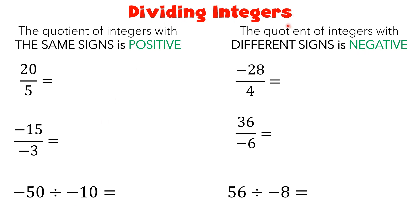Dividing integers. We only have two rules in dividing integers. First one, the quotient of integers with the same sign is positive. Then the second one, the quotient of integers with different sign is negative.